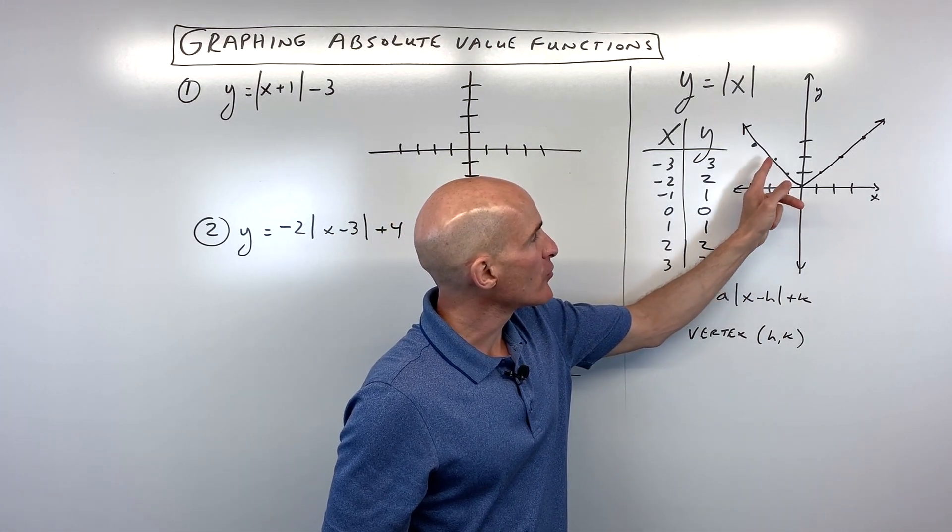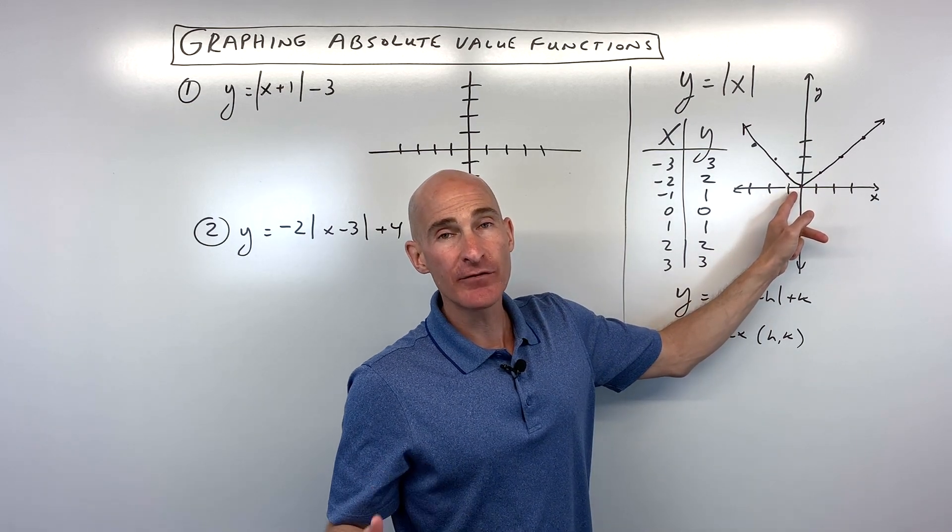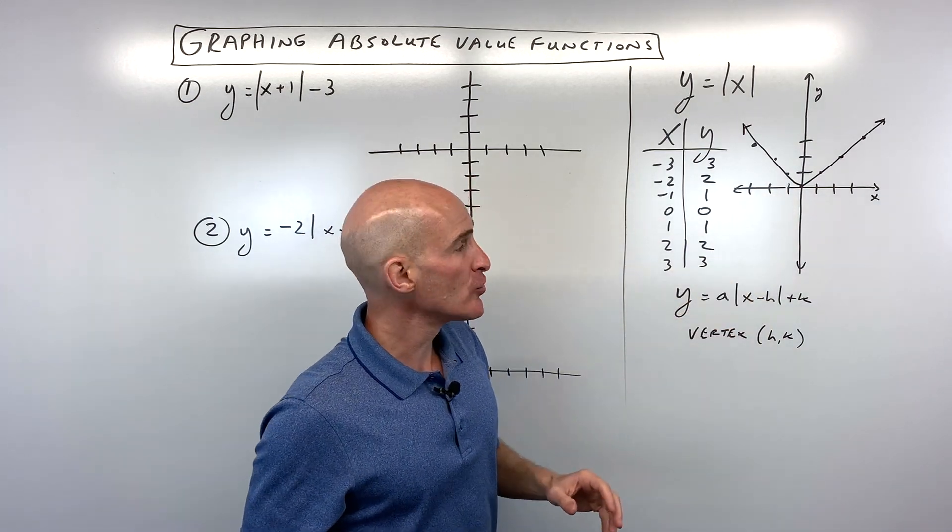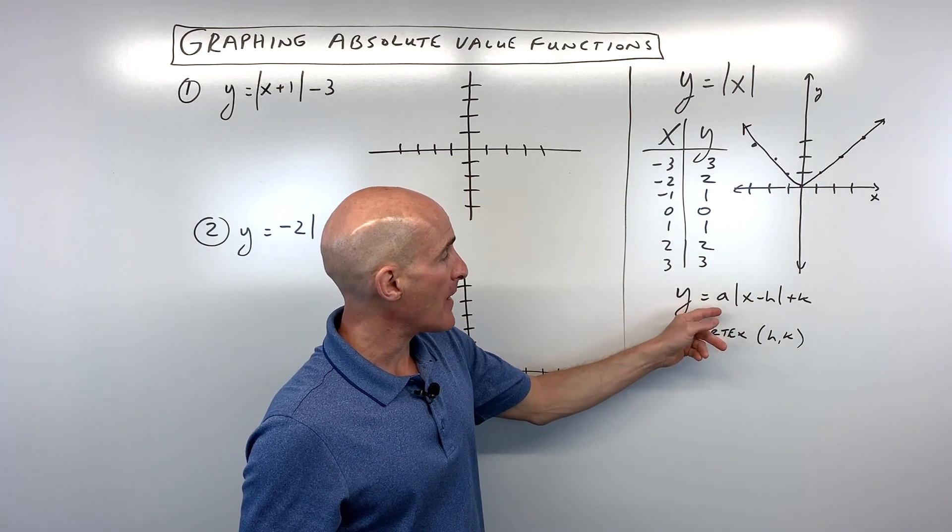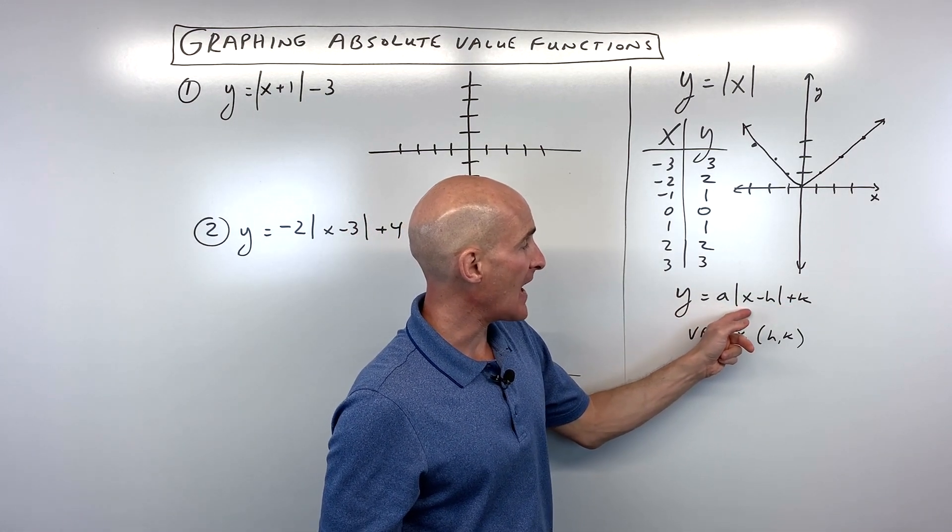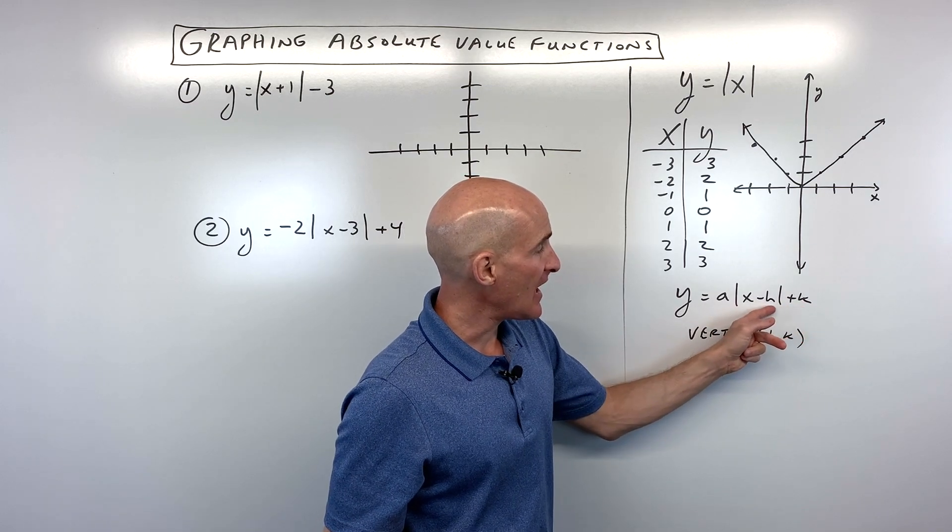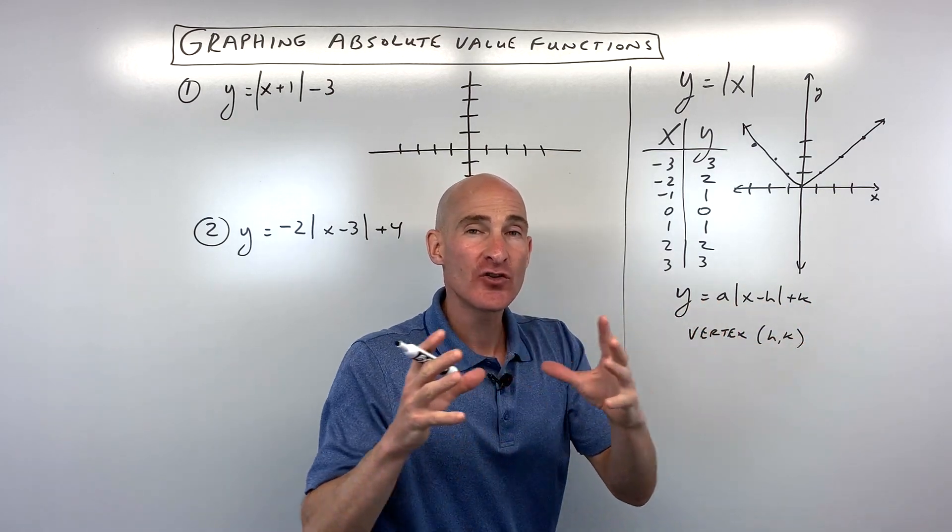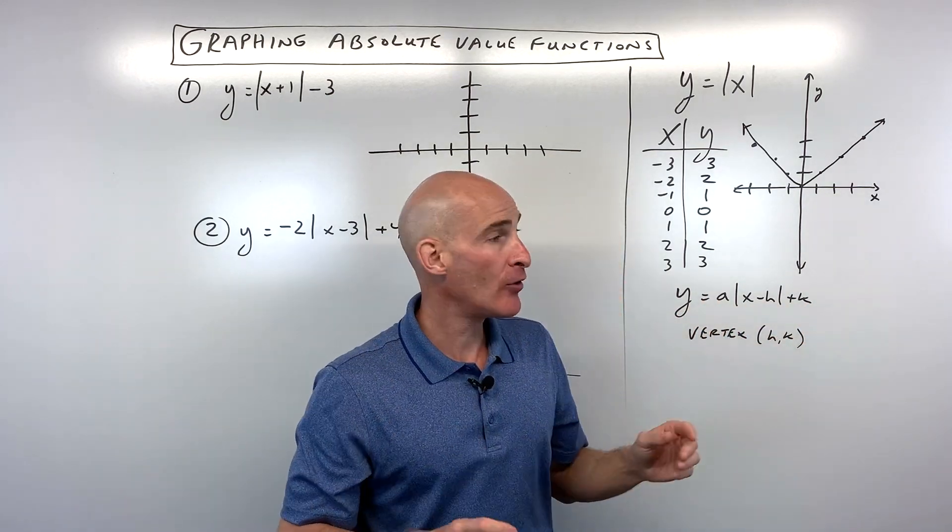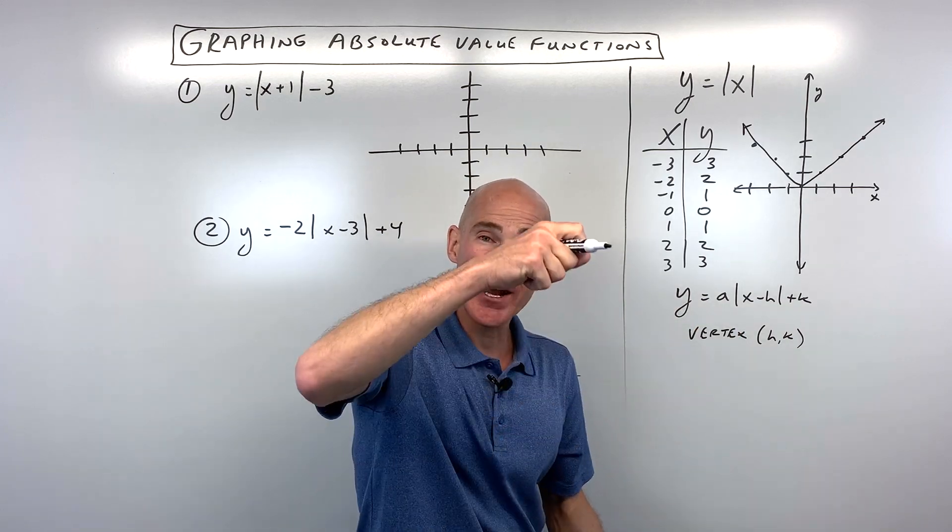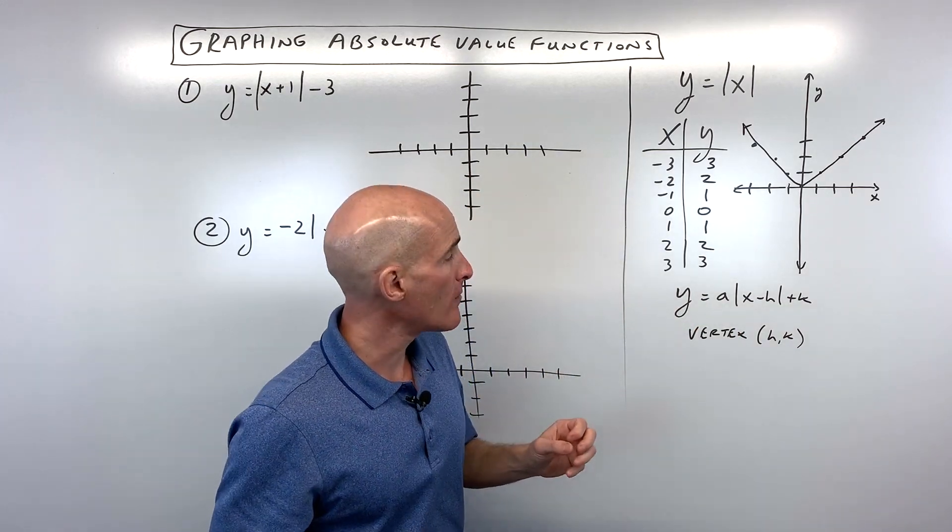So this point here where the graph bends, this is referred to as the vertex. And we're going to be looking at that closer when we graph absolute value graphs that are in this form, y equals a, absolute value of x minus h plus k. The h and the k is involved with shifting the graph left and right, up and down. And the a is involved with stretching the graph. So let's talk a little bit more about that.